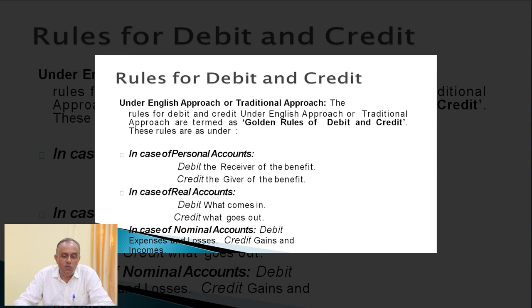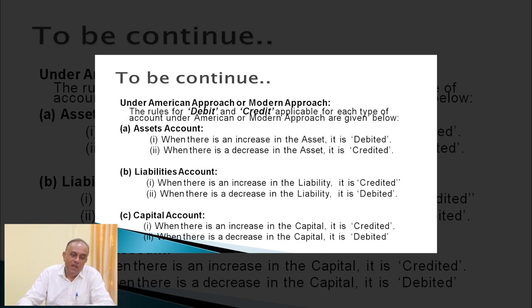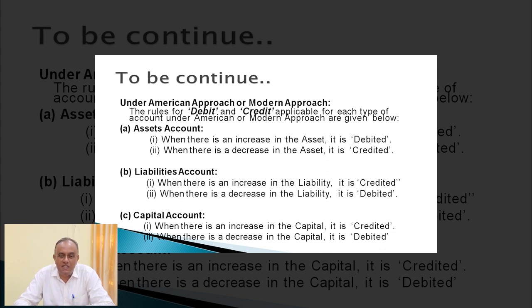As per the American or modern approach for debit and credit: for asset accounts, when there is an increase in the asset it is debited, and when there is a decrease in the asset it is credited. So the basic principle is: increase of asset is debit and decrease of asset is credited as per the modern approach.